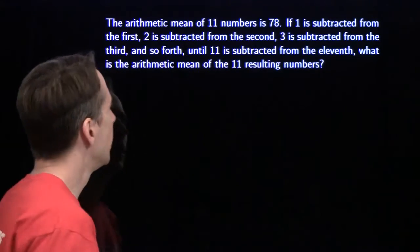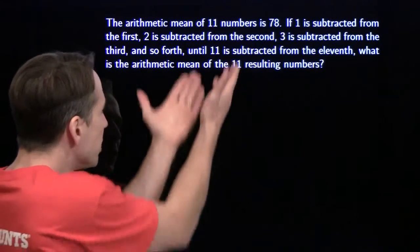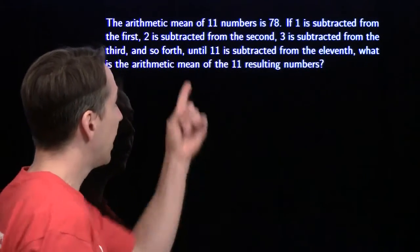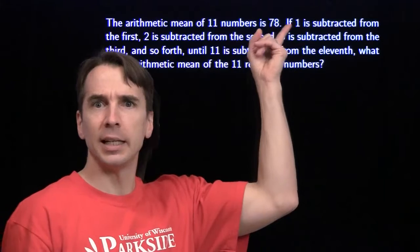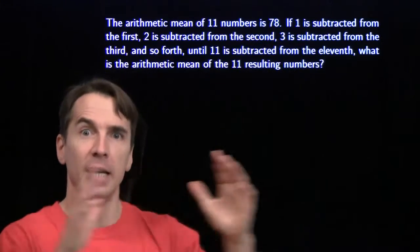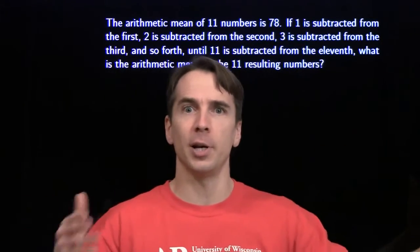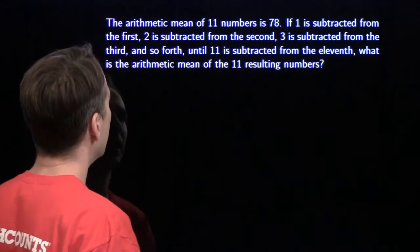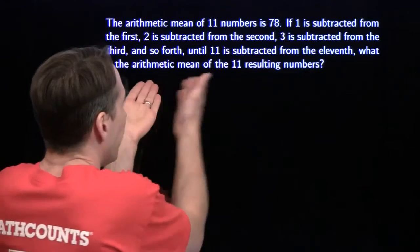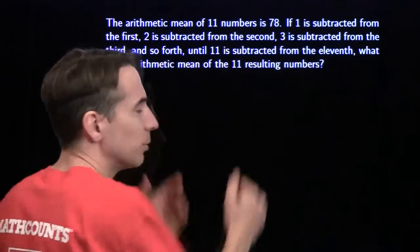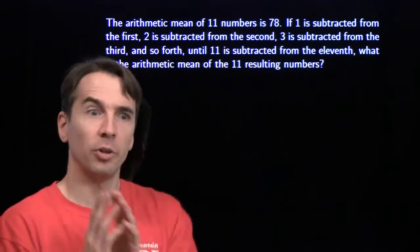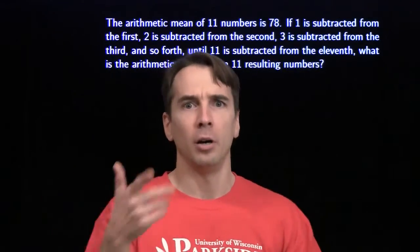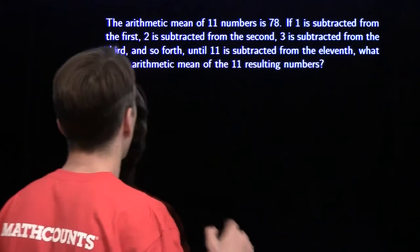You've got 11 numbers, so our original batch of numbers must have had 11 times 78 as the total sum — divide by 11 and you get an average of 78. So in order to find the average of the resulting numbers, we first want to find the sum of all the resulting numbers.